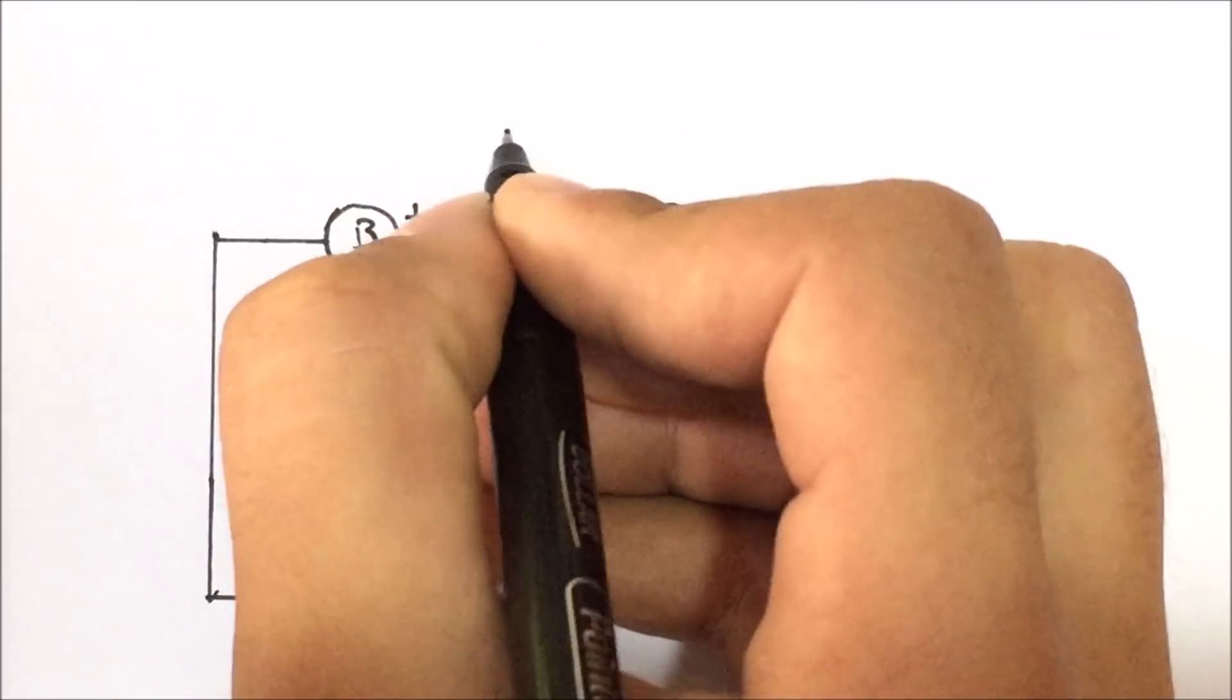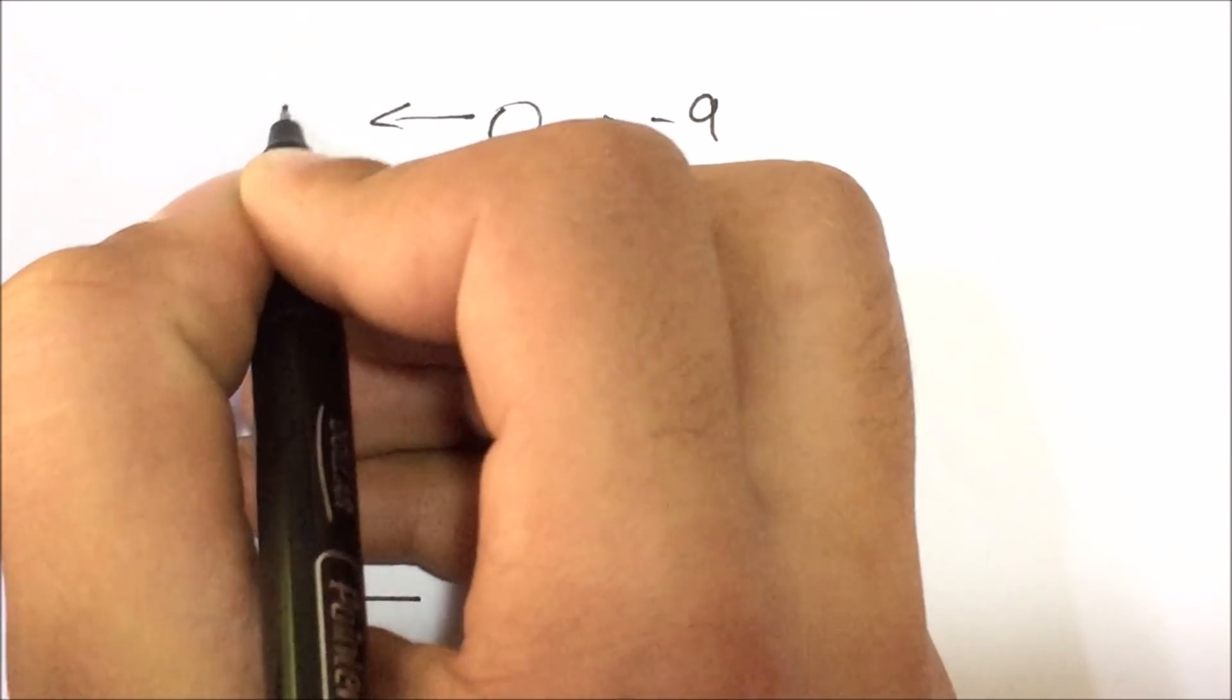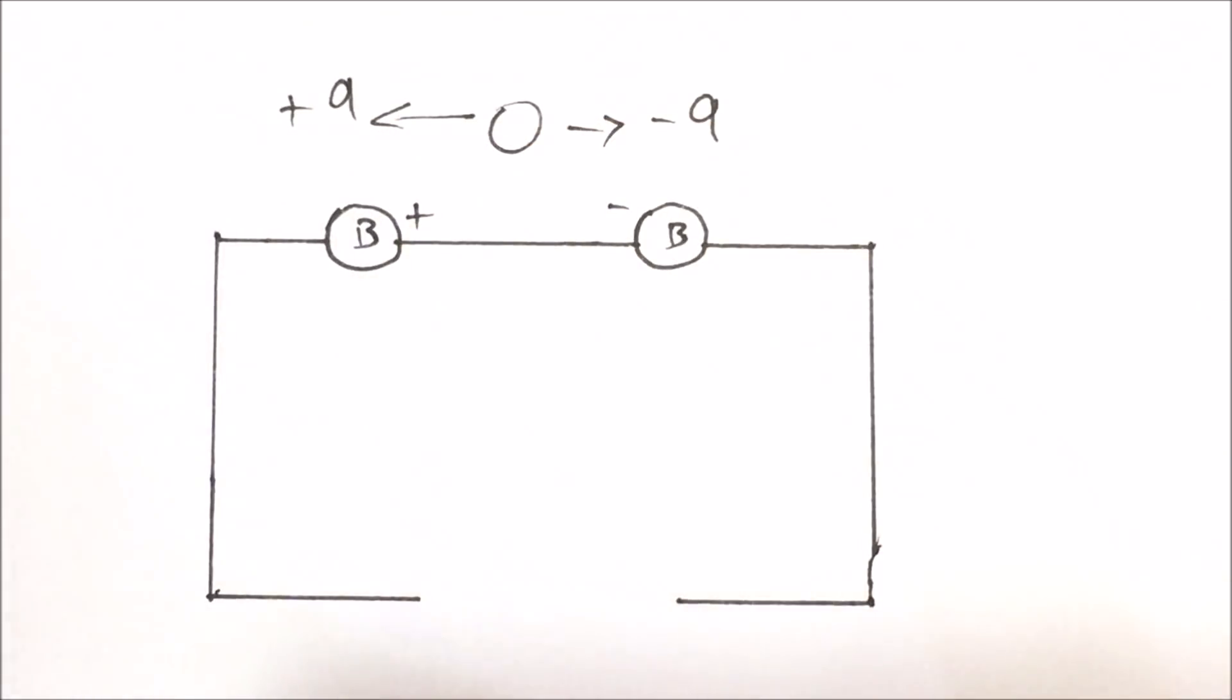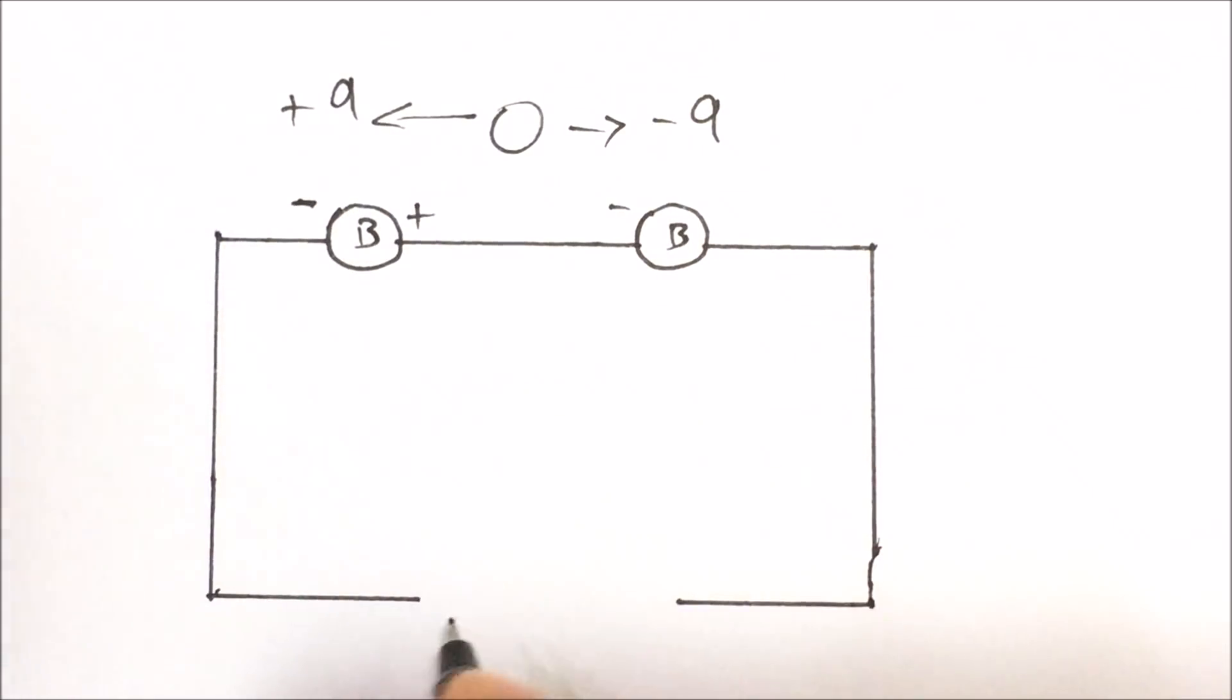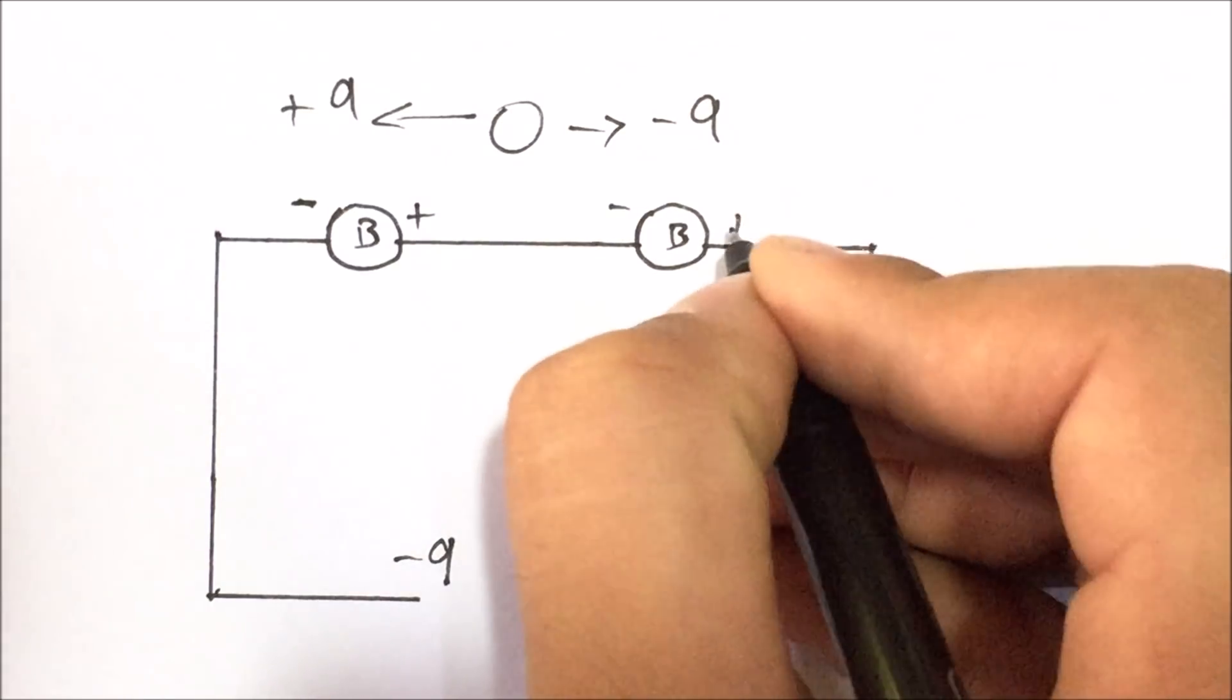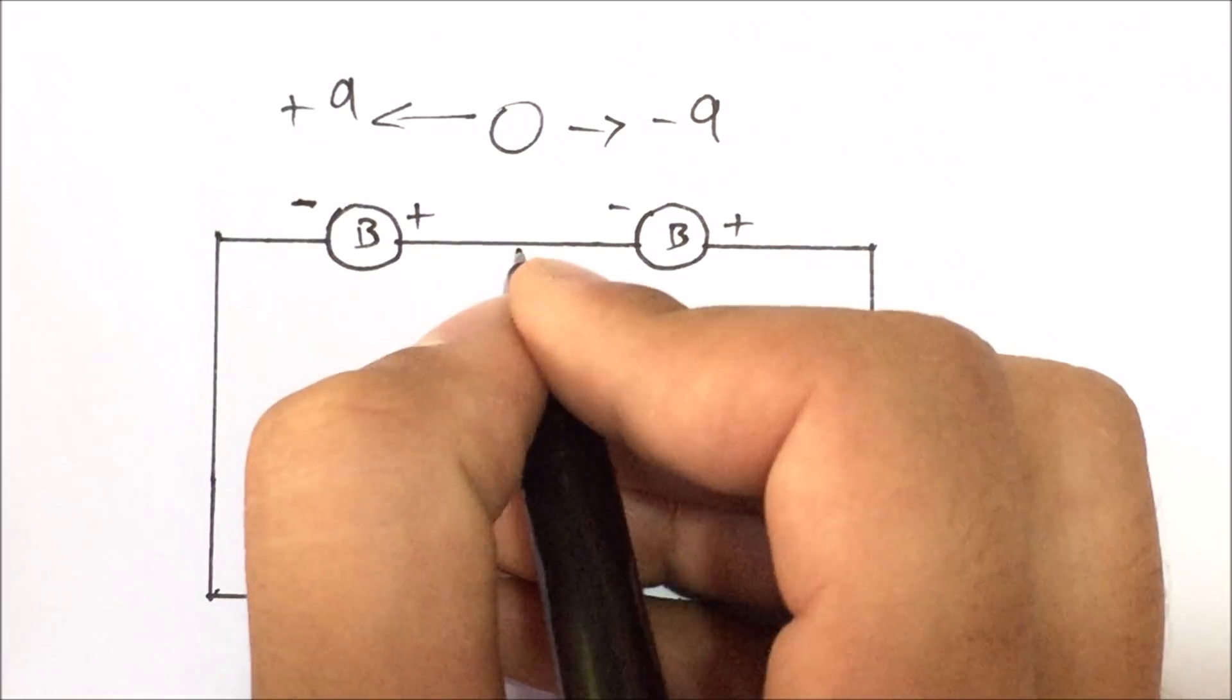Now the question is, how we can make this 0 to minus 9 and 0 to plus 9V supply? So to make this, you just have to connect the two 9V batteries in series. Now the remaining negative terminal will give you the minus 9V, and the positive terminal will give you the plus 9V. Now for the center point, you have to take it as a ground.